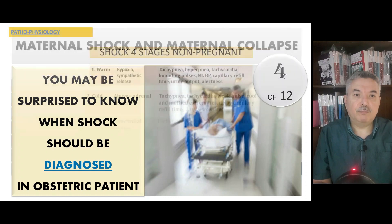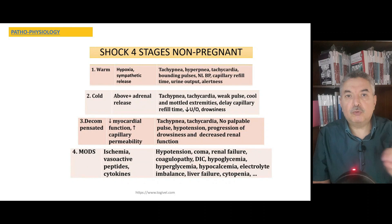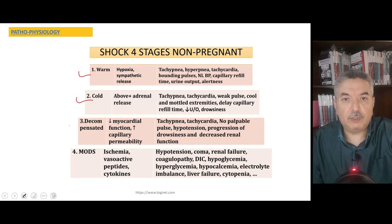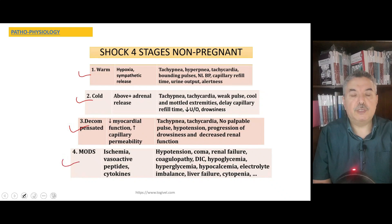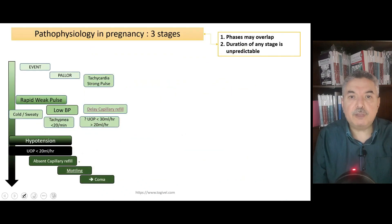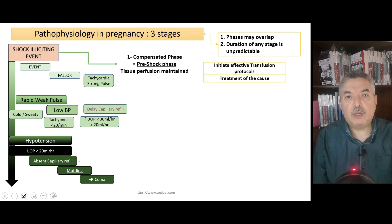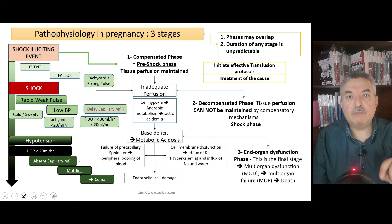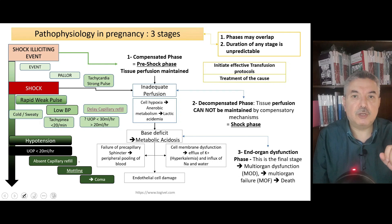In the trauma patient, shock has four phases: warm shock, cold shock, decompensated shock, and the multi-organ dysfunction syndrome (MODS) phase. This is not the case in the obstetric patient. Obstetric patients have three phases: the compensated phase, the decompensated phase, and the MODS phase — as explained in the earlier parts of this lecture on shock and collapse.